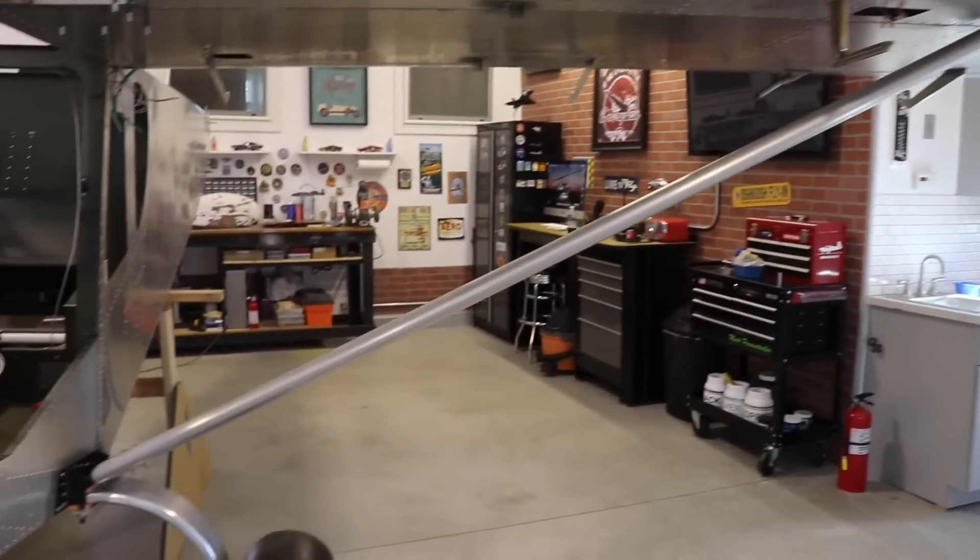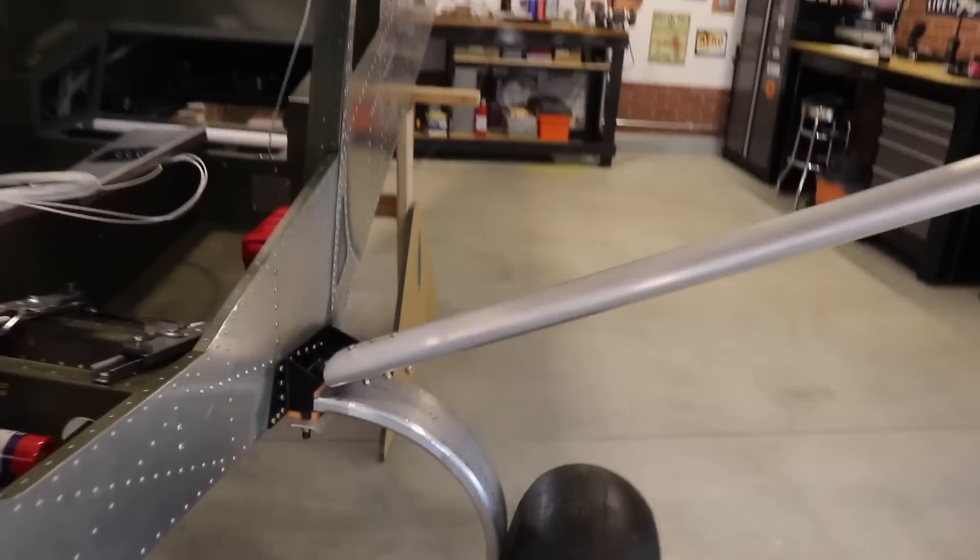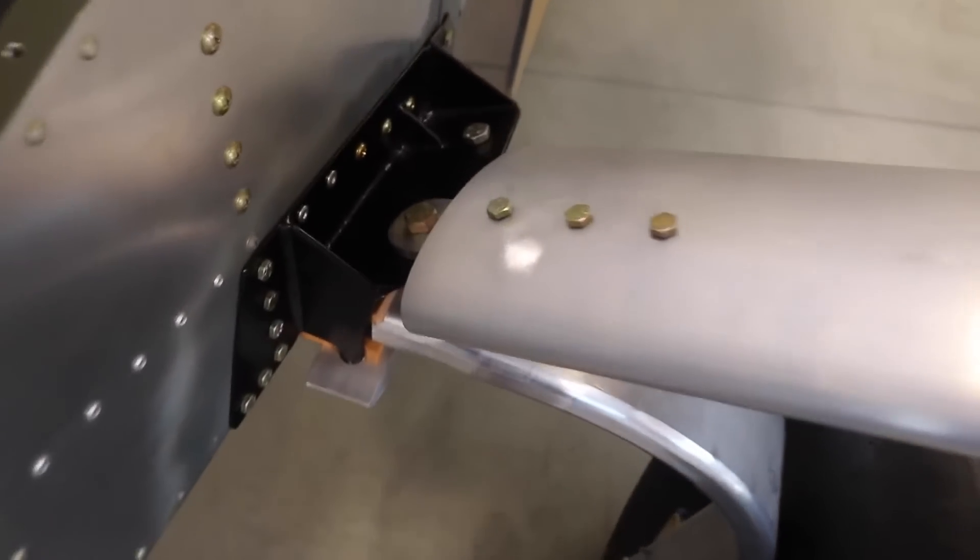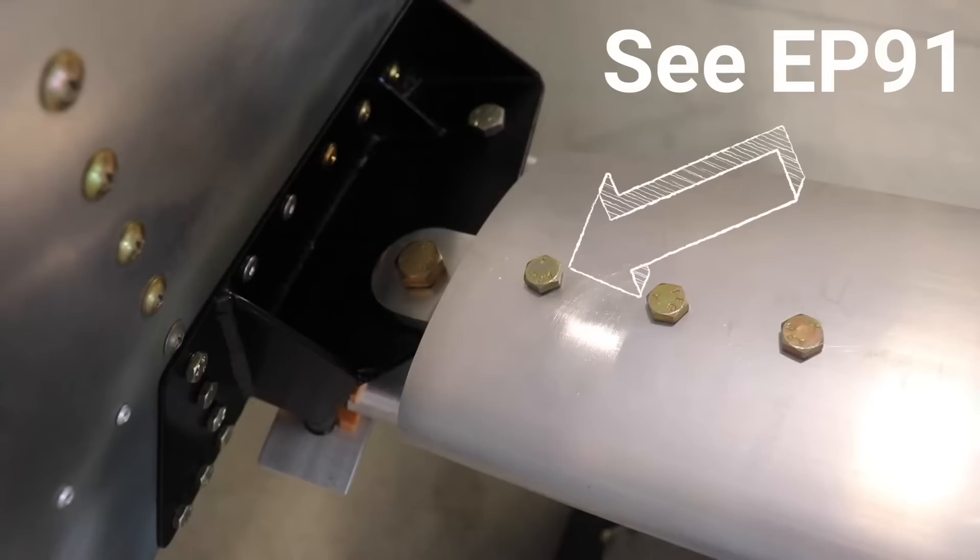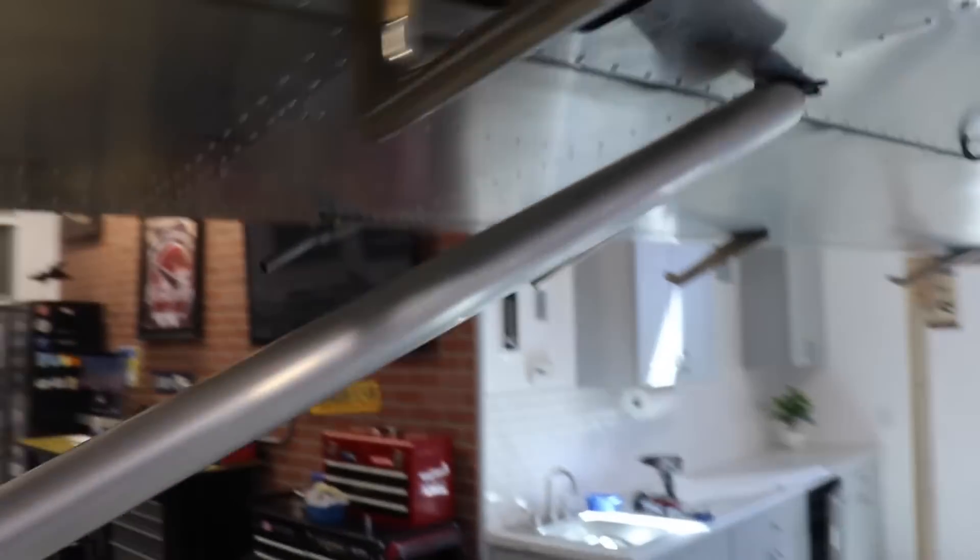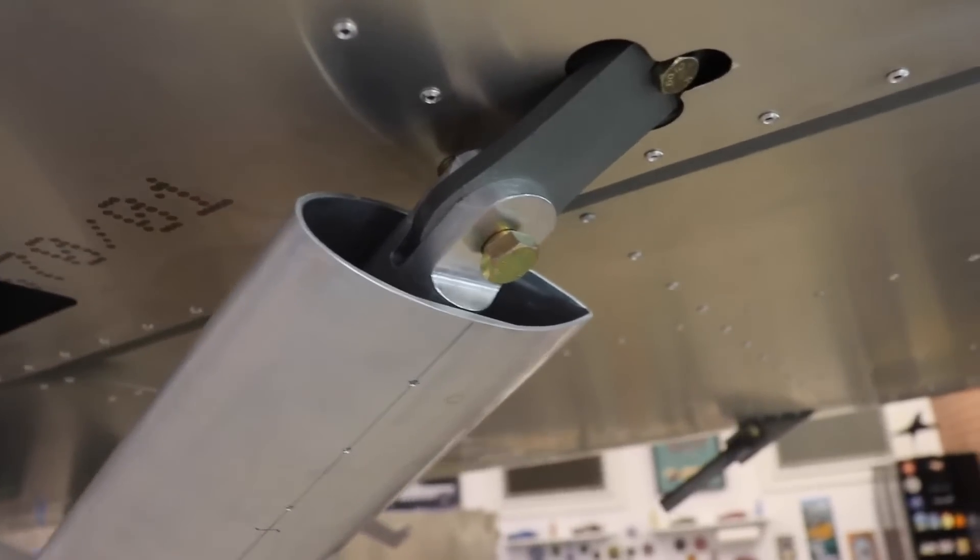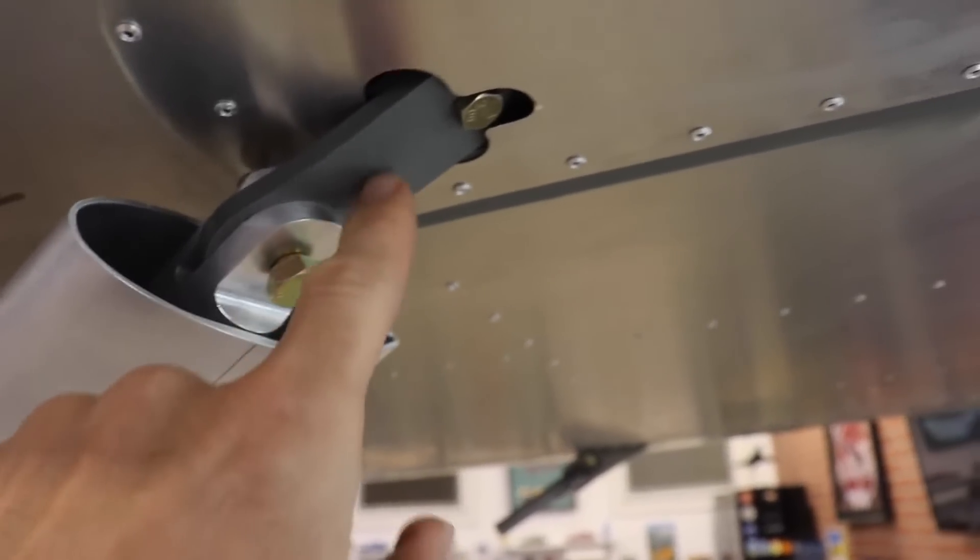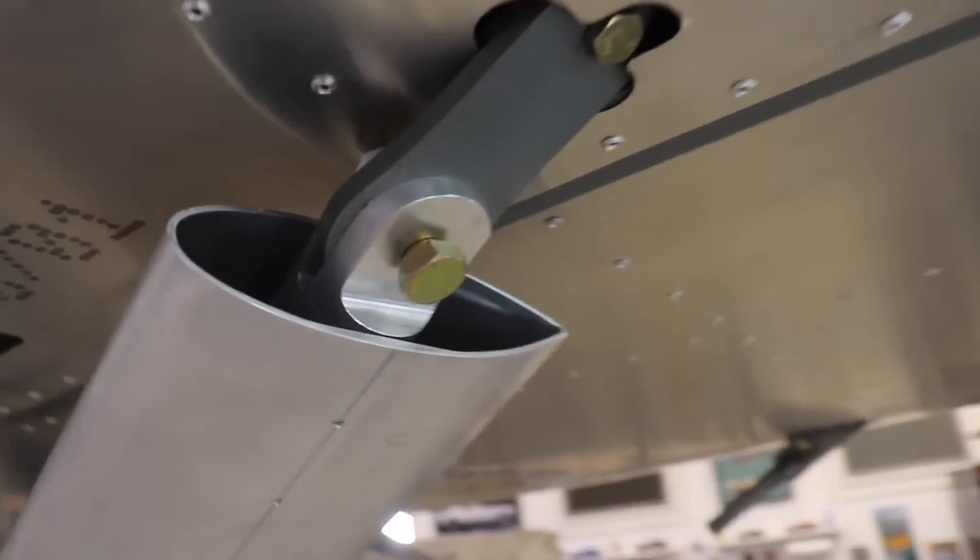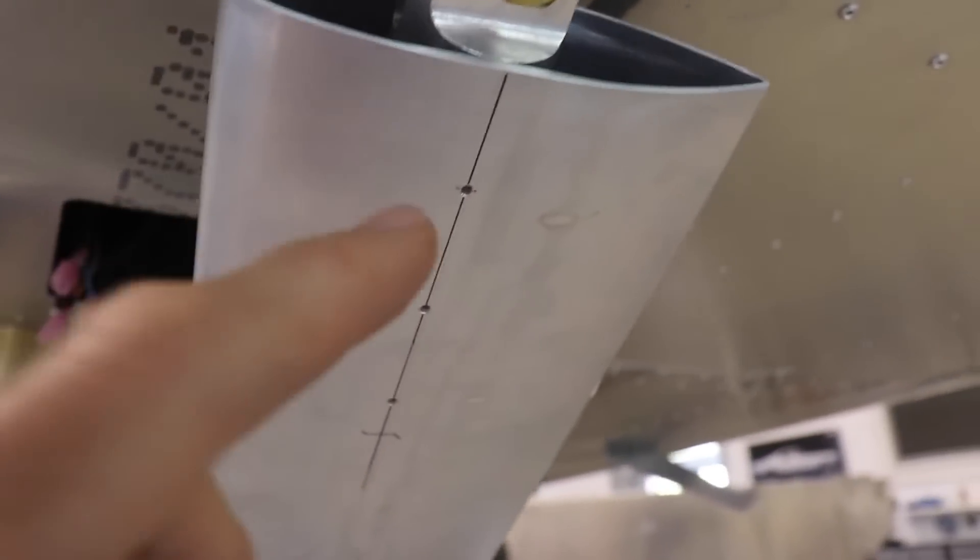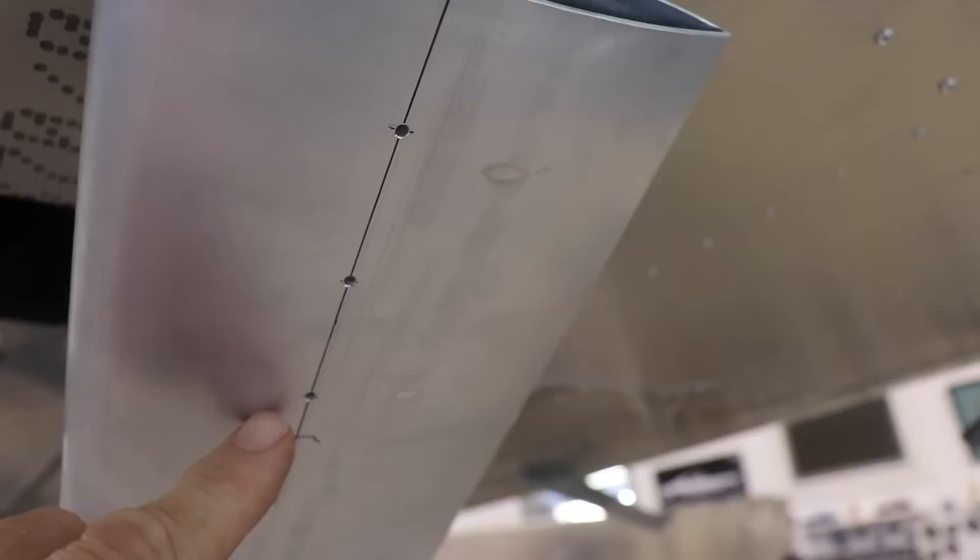I now have my strut temporarily attached. At the bottom, I have the bolt in there, and if we go out to the top of the strut, you can see I have the attach fitting with the bolt through the fitting on the wing, and I've drilled three holes in here where the bolts will go through.